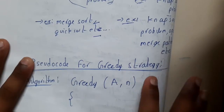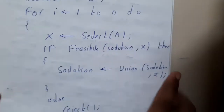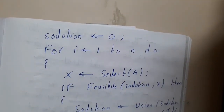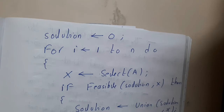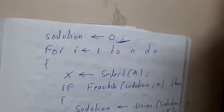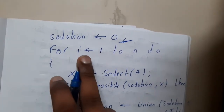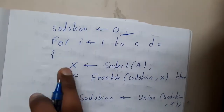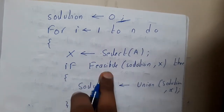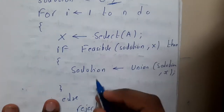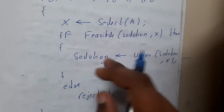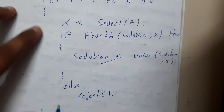The algorithm will check the solution and directly push into the solution, checking whether it is feasible or not. Initially there will be nothing in the solution. You iterate from 1 to n, select a particular element, push it, and check whether it forms a feasible solution. If it is feasible, you blindly push it in and continue.